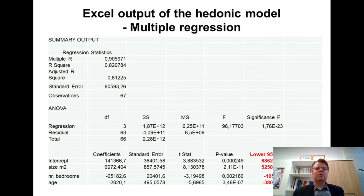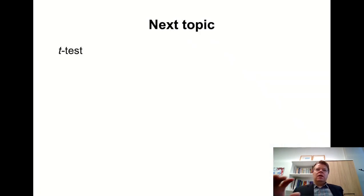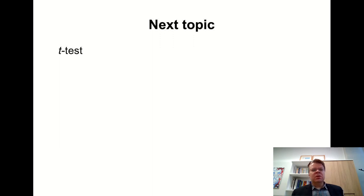If the sample size is very large — thousands of observations — you can harmlessly replace the critical value of the t-distribution with the standard normal distribution; there's no difference whatsoever in that case. As the next topic, I will discuss hypothesis testing and start with the classic t-test. Thanks for your attention.